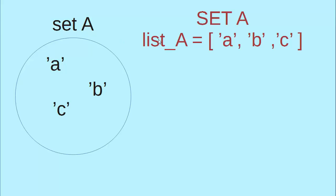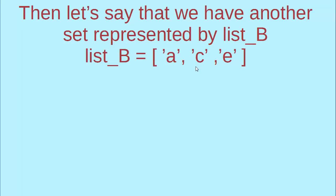Set A could be represented by list or in other words list A could be represented as a set with elements A, B and C. Next let's say that we have another set represented by list B.